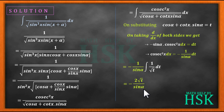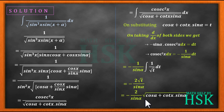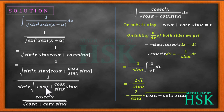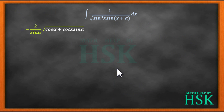On substituting back the value of t — that is, replacing t with (cos α + cot x · sin α) — we get minus 2 upon sin α times square root of (cos α + cot x · sin α). Since the original question was in terms of sin(x + α), this bracket needs to be converted back to that form. Writing cot x as cos x / sin x and taking the LCM: